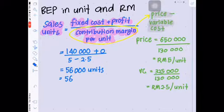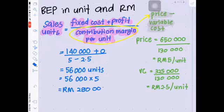To get the value in RM, you have to multiply the unit with selling price per unit, which is RM5 per unit. Then you will get the answer, RM280,000.